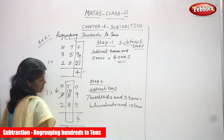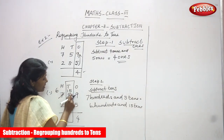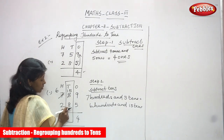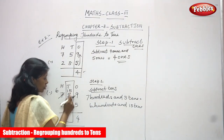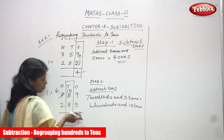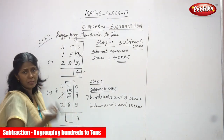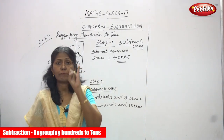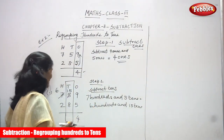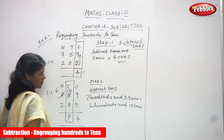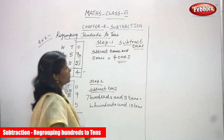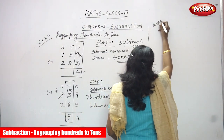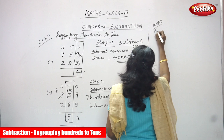Now fifteen is the greater number. Fifteen minus eight: start backward counting after eight — nine, ten, eleven, twelve, thirteen, fourteen, fifteen. That is seven. The answer is seven tens.